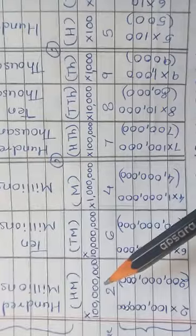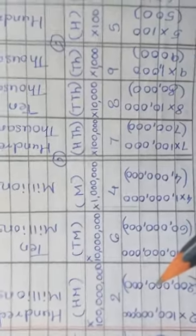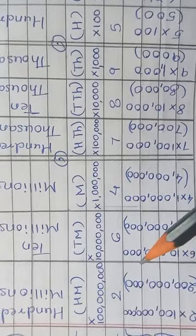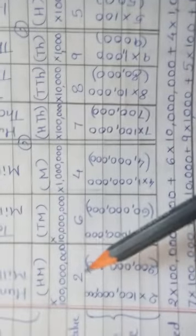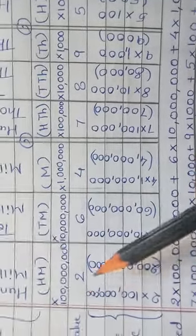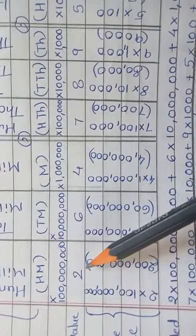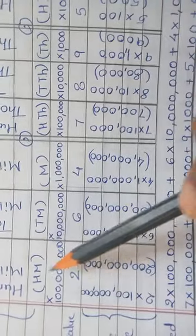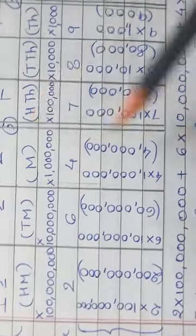Now let's consider the face value and place value of the digits, the same way I explained in the Indian system of numeration. The face value of each digit is the same as that digit. So the face value of 2 is 2, but as it is in the hundred millions place, the place value of 2 is 200 million.